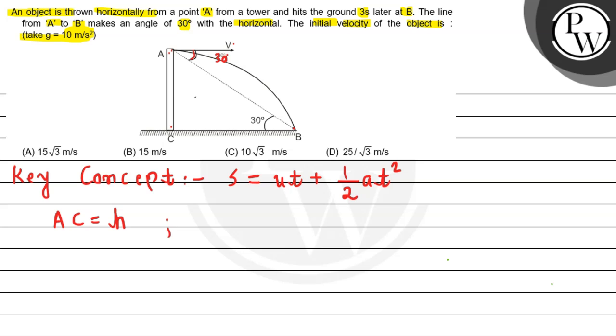Now if you see from point A, the object is thrown in horizontal direction, so its initial velocity in vertical direction will be zero. So let's suppose its initial velocity is u, which is in y direction, means vertical direction. So u of y, this component will be equal to zero.